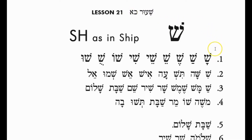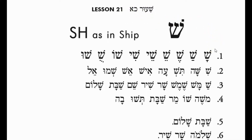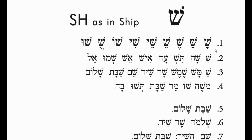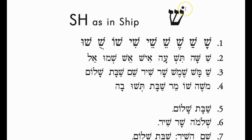In this lesson we are introduced to a new letter. This is a letter — again we have to follow the dot. So this is the Shin, S-H-I-N. Shin has the 'sh' sound as in 'ship.' We will address it in a future lesson — if it has the dot on the left side, it is Sin.